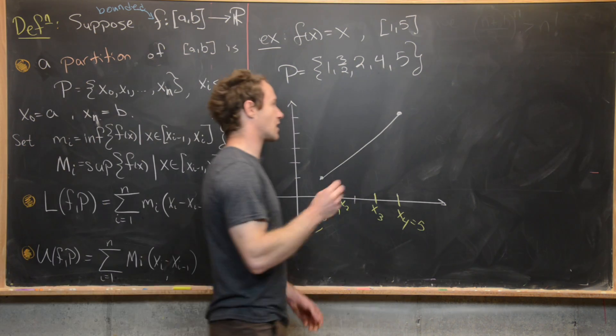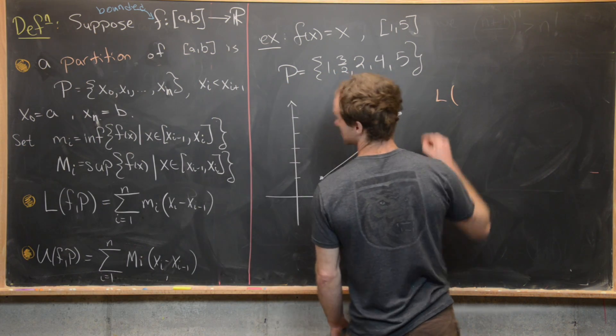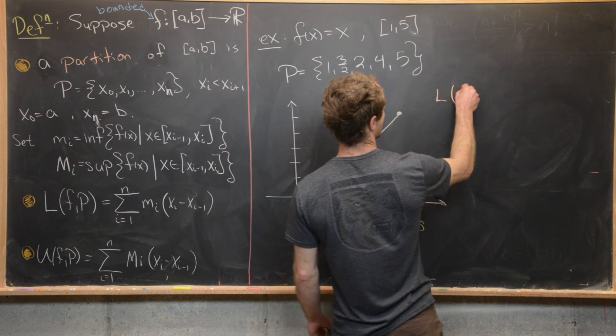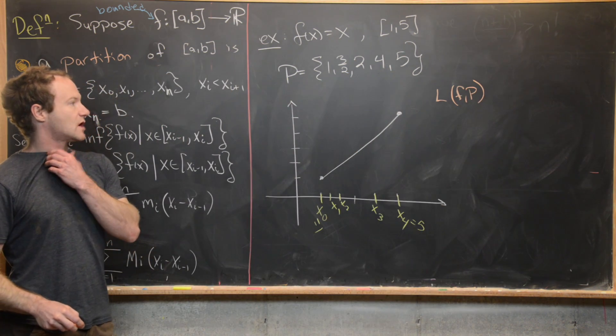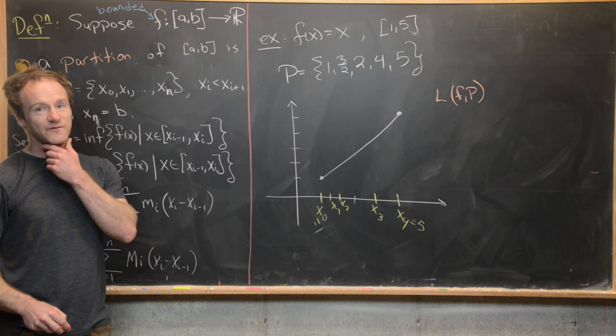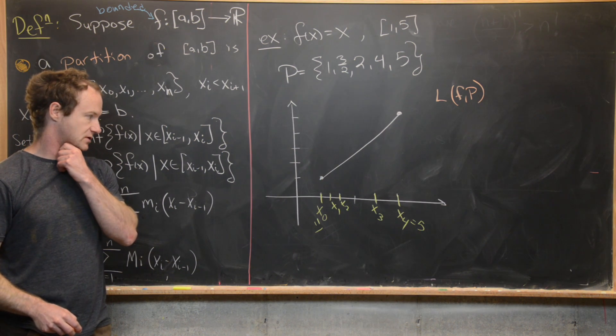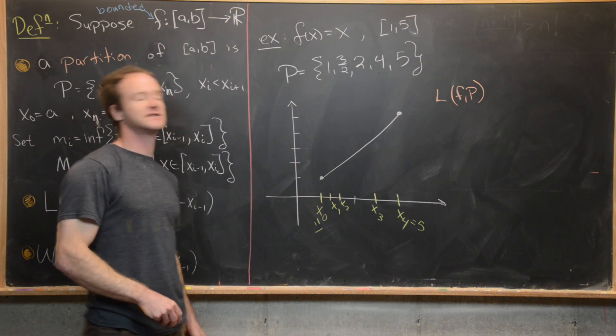Now let's maybe do our lower sum in this peach color. So we want to do L(f,p). Let's do it geometrically. So this is going to be the infimum of our function on each of these subintervals.